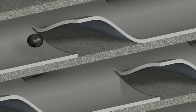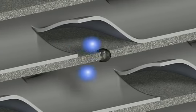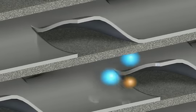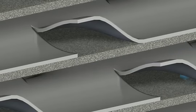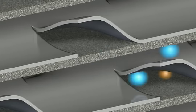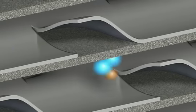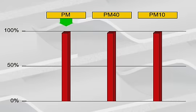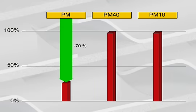The trapped exhaust particles are combusted together with the NO2 formed during the first stage and thus converted to gaseous carbon dioxide, CO2. This allows even the smallest particles — so-called nanoparticles — to be filtered out at a disproportionately high rate, up to 70% for the entire particle mass.